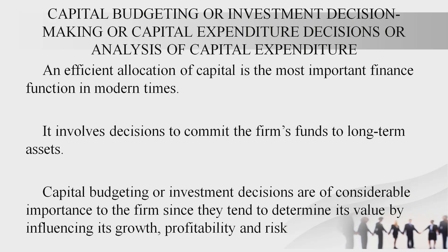Under investment decision, there are two things: long-term investment and short-term. When it is long-term, you call it capital budgeting, investment decision making, capital expenditure decision, or analysis of capital expenditure. Capital refers to a huge amount of money that must be efficiently used and allocated. It involves a decision to commit the firm's funds to long-term assets. Capital budgeting decisions are of considerable importance to the firm because in the long run, they affect the growth, profitability, and risk of the firm, and play a major role from a societal perspective.